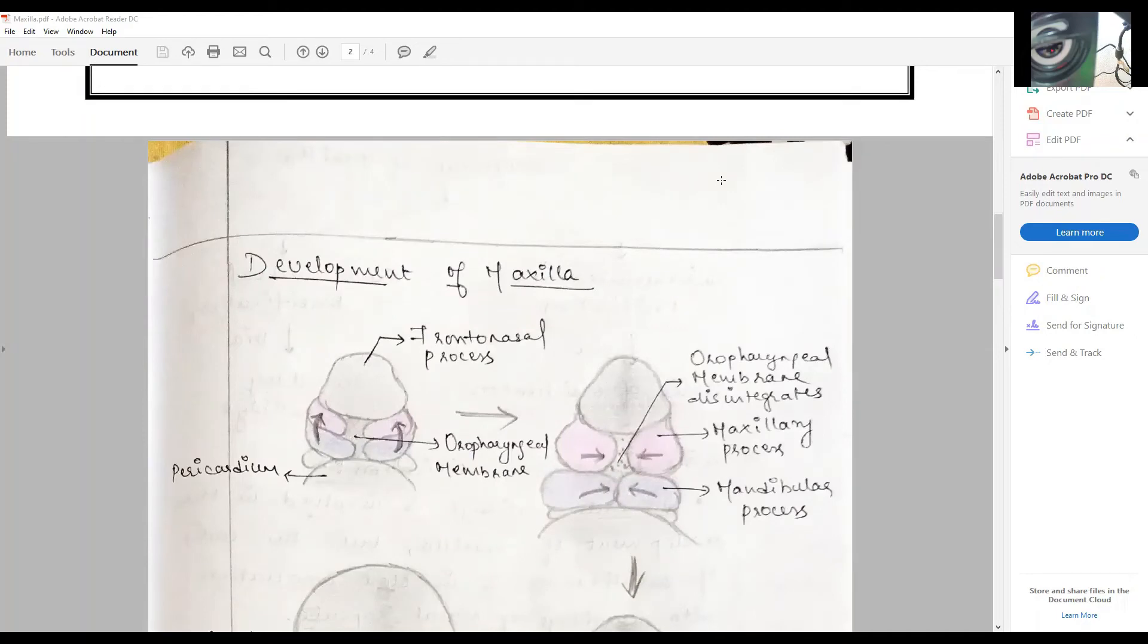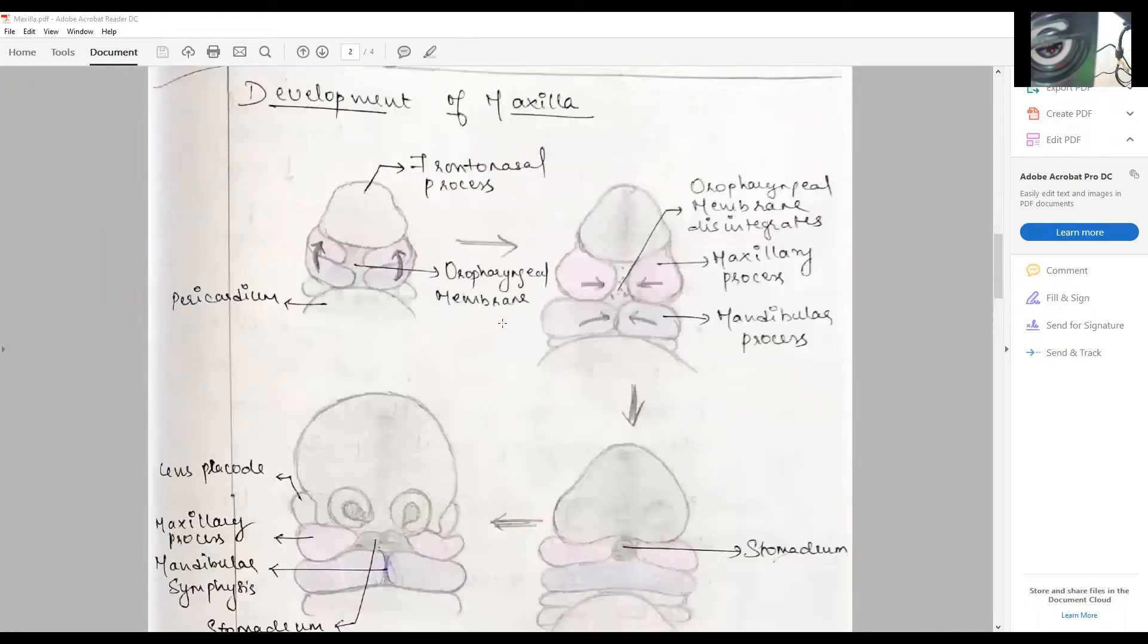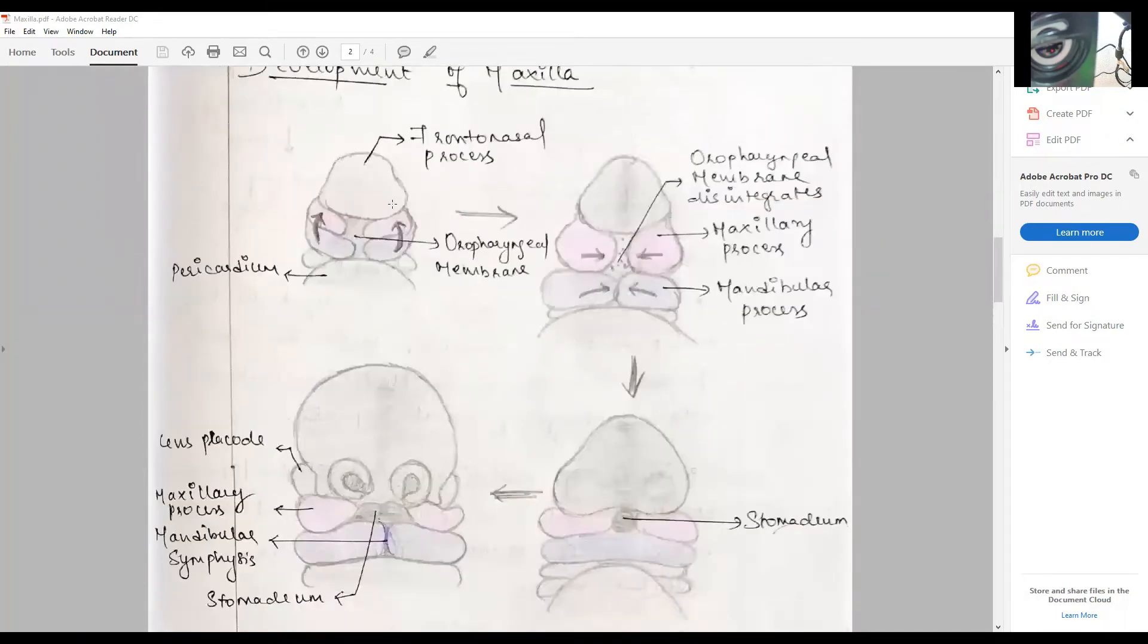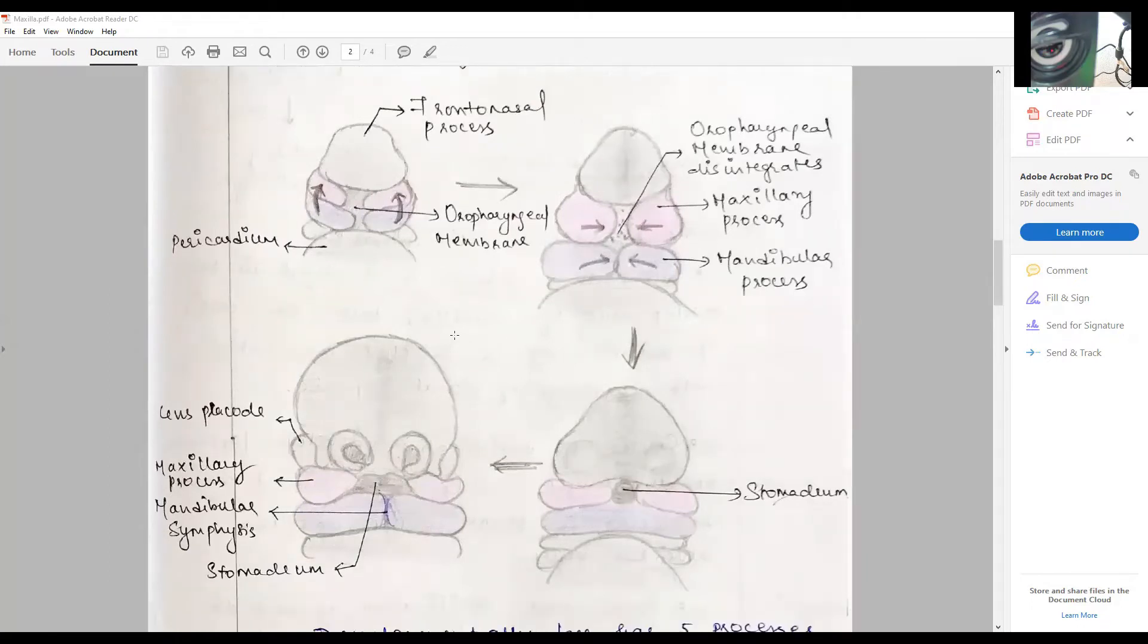The first brachial arch and other brachial arches, especially these diagrams, have to be clearly mentioned. See, the student has drawn about the frontonasal process, the persistence of the oropharyngeal membrane, the initial perichondrium, how the maxillary processes and mandibular process move, how the maxillary process moves here in this stage, how the oropharyngeal membrane disintegrates.